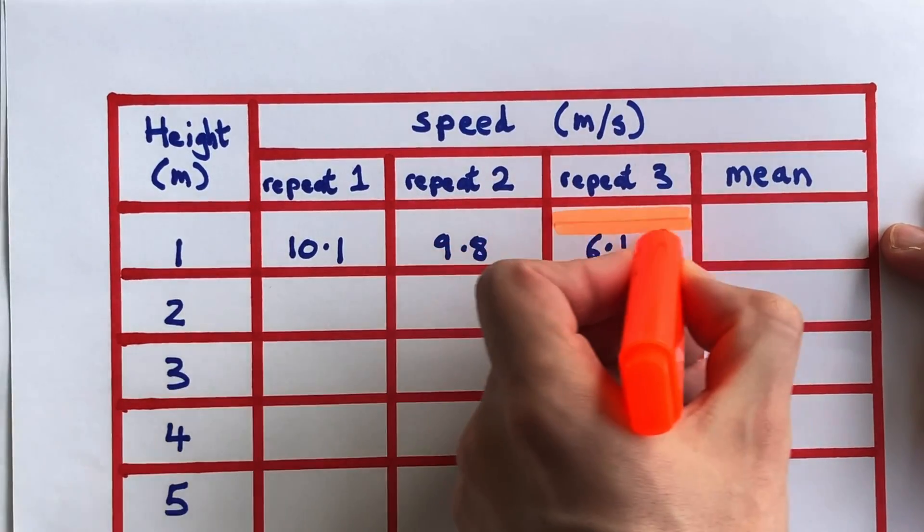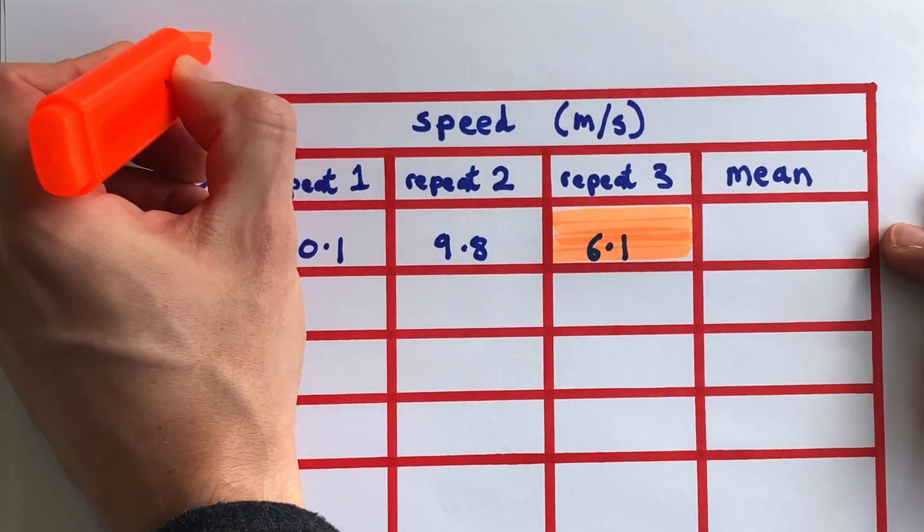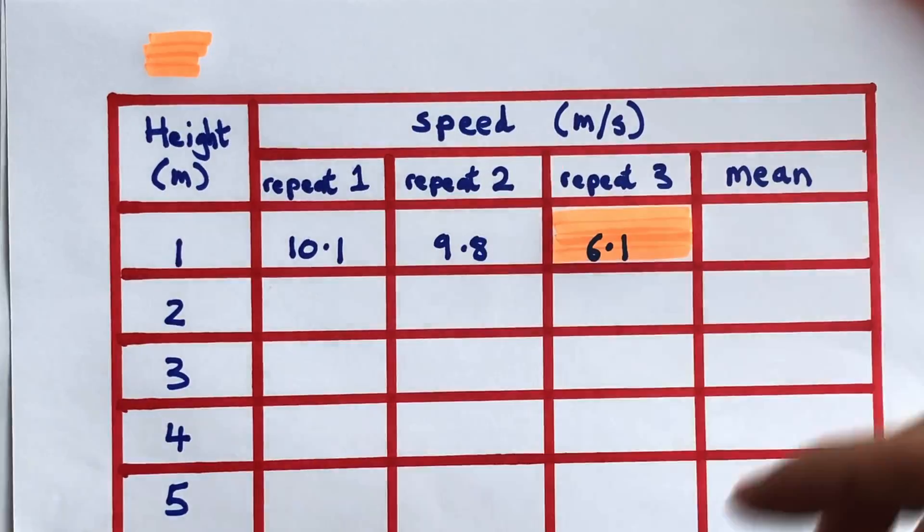When you spot an anomaly, highlight it and add a key. Later, when you calculate the mean, you'll ignore any anomalies you found.